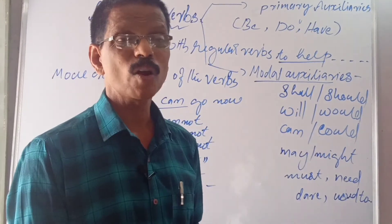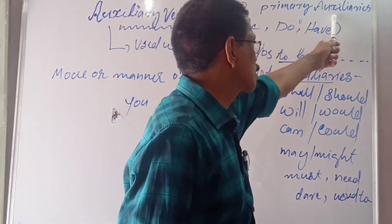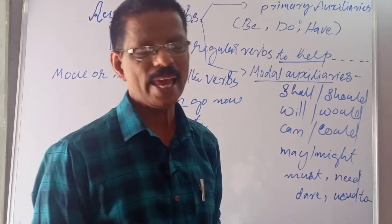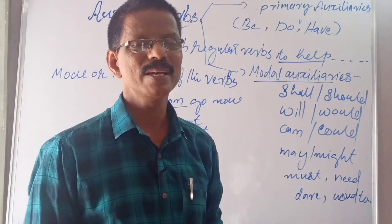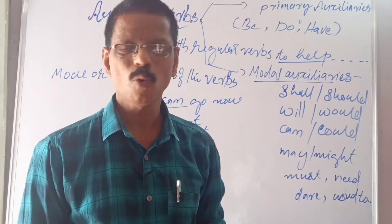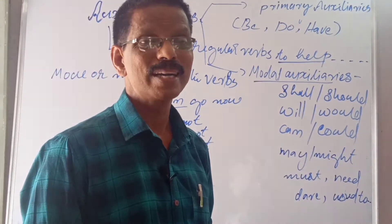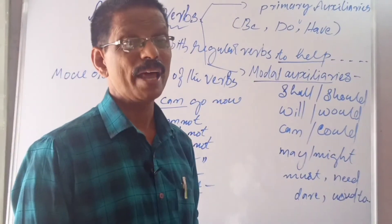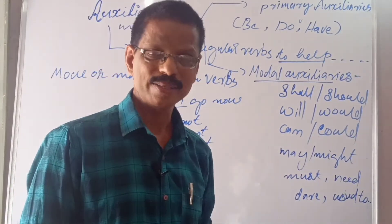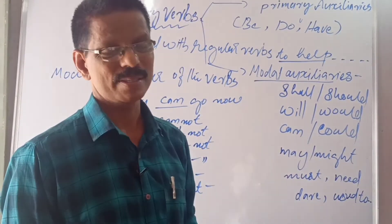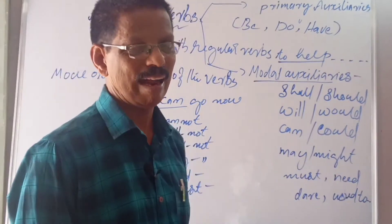Auxiliaries are of two types. Primary auxiliaries — there are three. The forms of the verb be: am, is, are, was, were — we saw already. Then do, does, did — and have, has, had as past, and had as past participle. Has is singular.